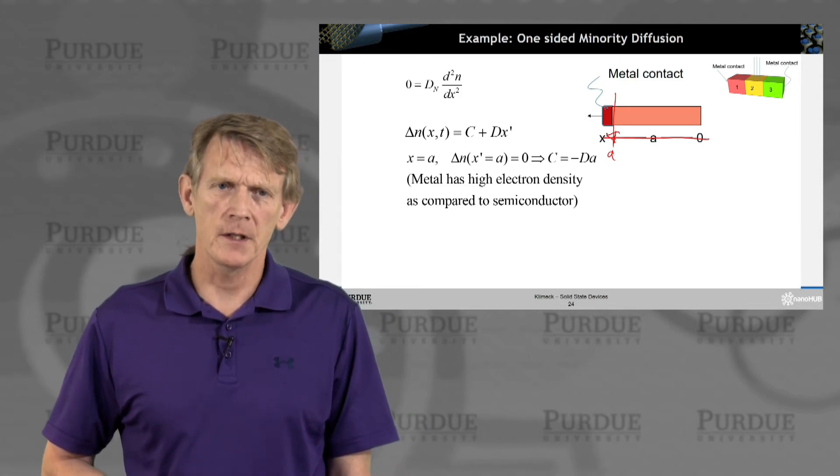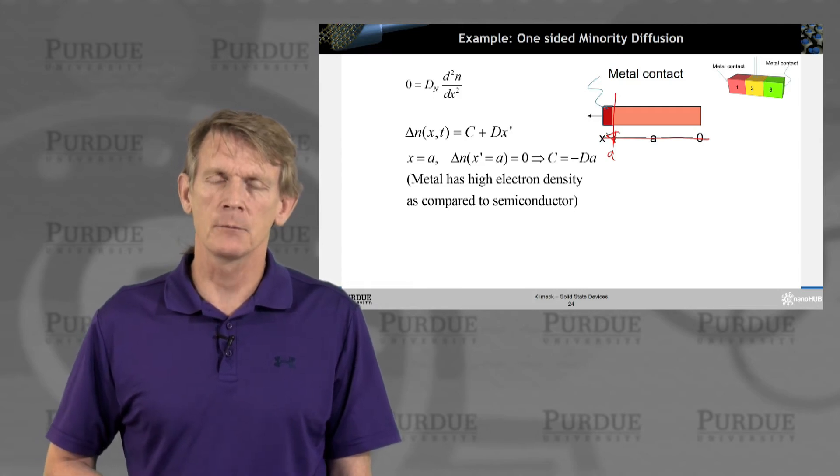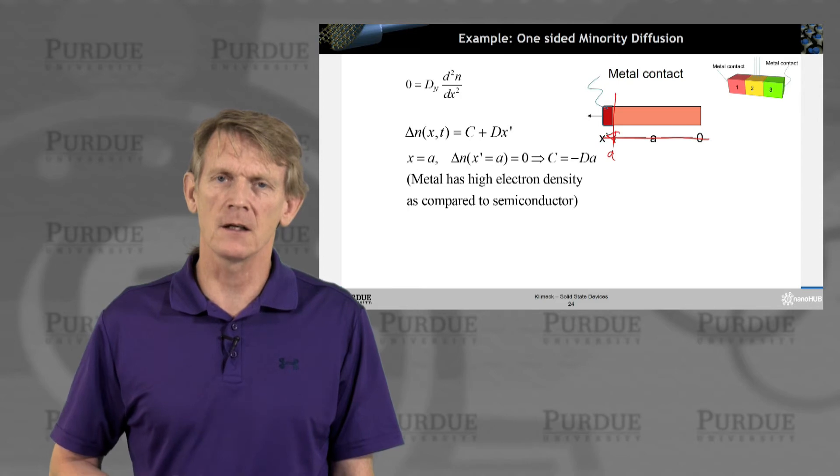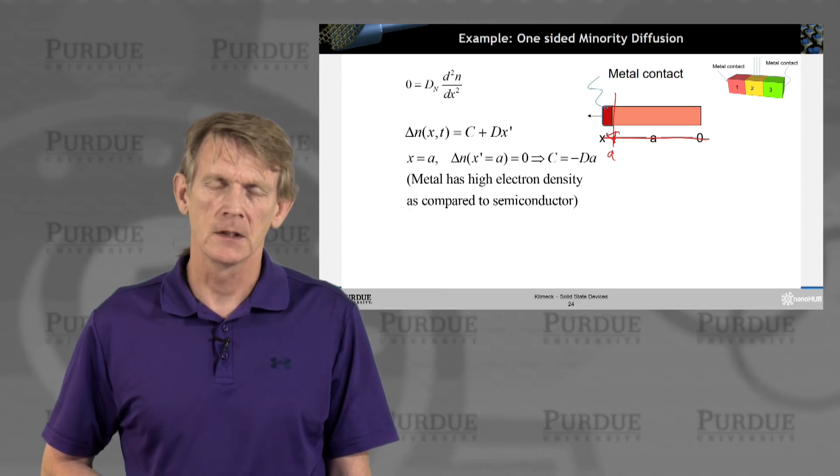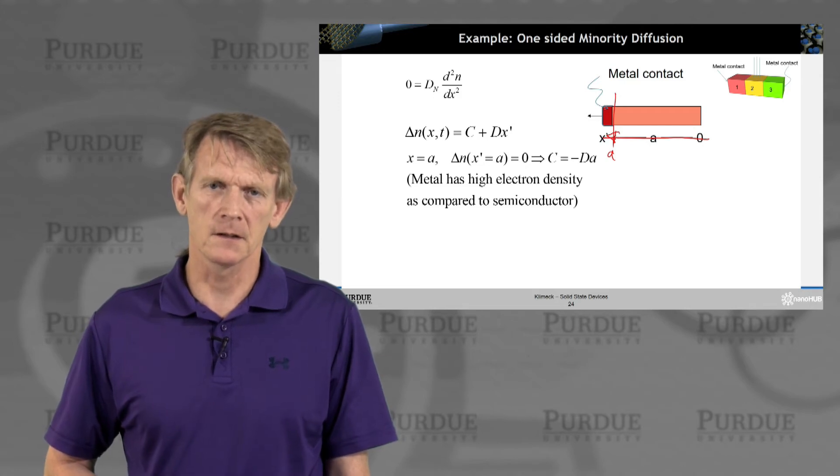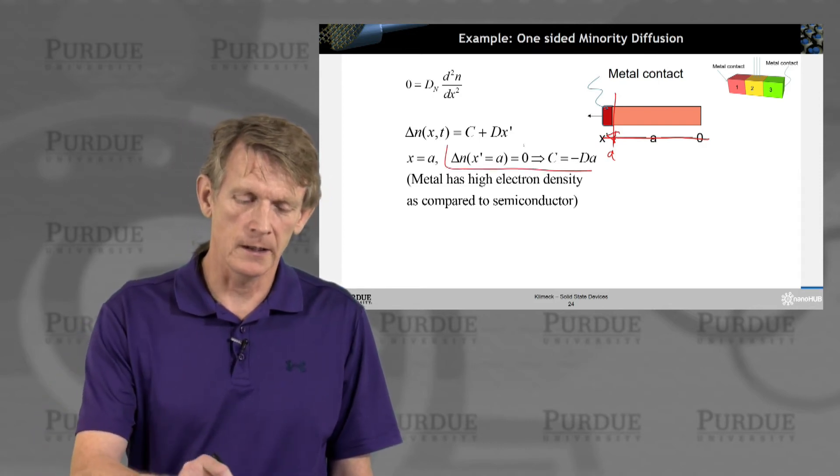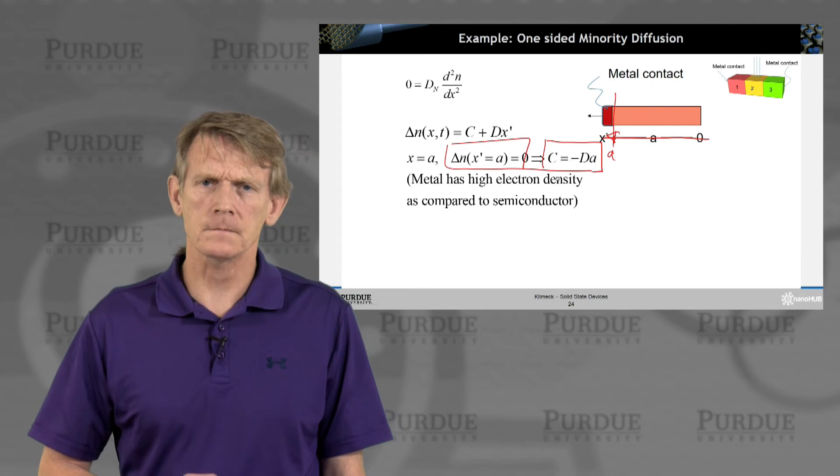So a metal contact means, in general, that the minority carrier concentration at the metal contact is going down to zero, because the metal provides so much density of states and so much high electron density that will just take on the semiconductor excess carriers. So basically, the normal assumption is that a metal contact at a semiconductor interface sets the minority carrier concentration back to zero. So that's the boundary condition here on the left, which means that c must be minus dA.